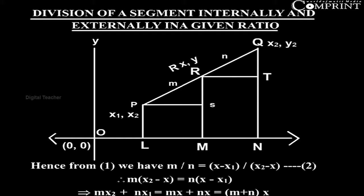Hence from (1) we have m/n = (x - x₁)/(x₂ - x) (equation 2). Therefore, m(x₂ - x) = n(x - x₁), which implies mx₂ + nx₁ = mx + nx = (m + n)x.